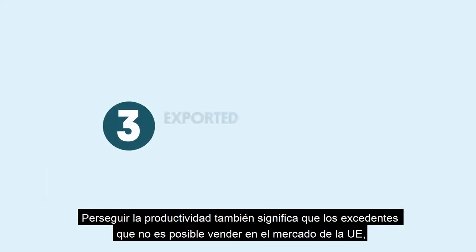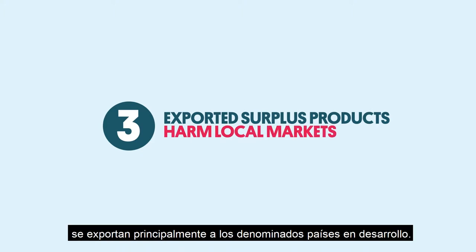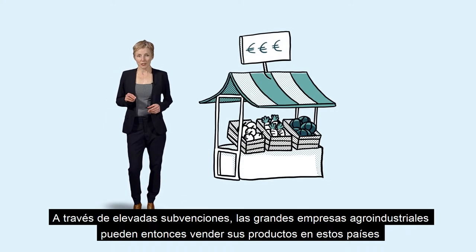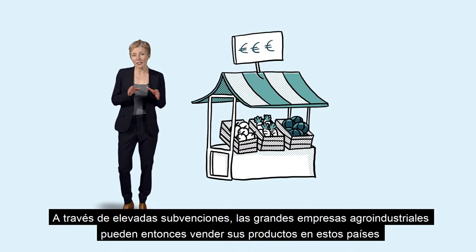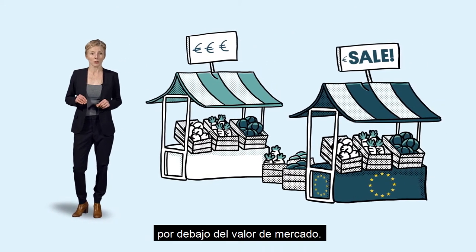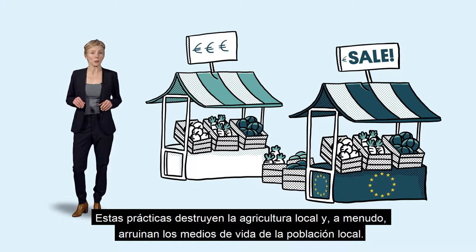Chasing productivity also means that surplus products that cannot be sold on the EU market are instead mainly exported to so-called developing countries. Through high subsidies, large industrial agro-enterprises can then sell their goods within these countries at way below the market value. These practices destroy local farming and often ruin entire livelihoods for local people.